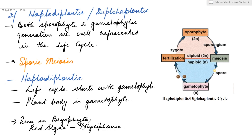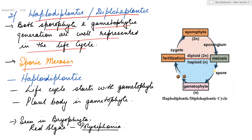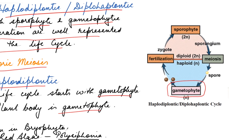The second type of life cycle is haplodiplontic or diplohaplontic. In this type, both the sporophyte and the gametophytic generations are well represented in the life cycle. Meiosis occurs prior to the formation of spores, hence sporic meiosis is seen. In the case of the haplodiplontic life cycle, the life cycle starts with the gametophyte, so the plant body is the gametophyte.